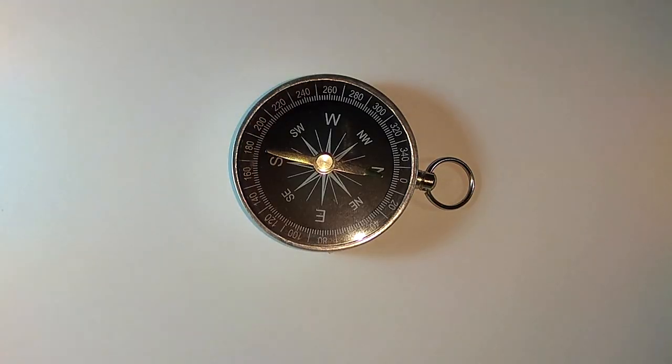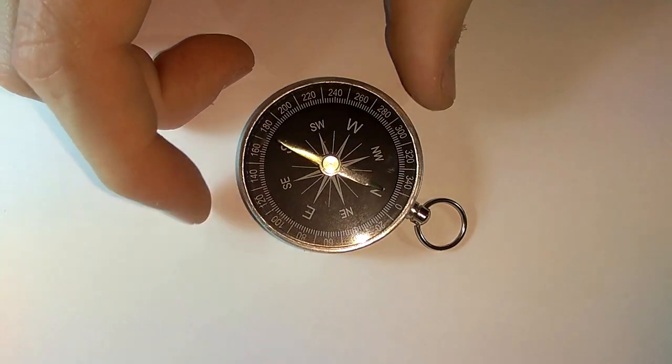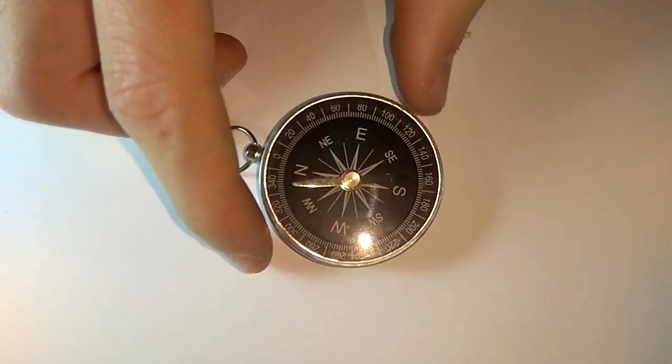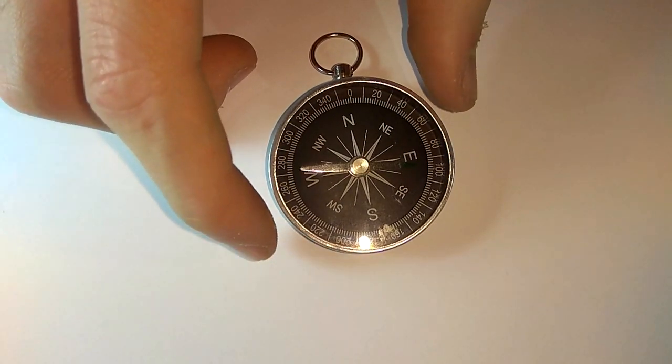A compass is a device based on magnets' behavior, which consists of a magnet that always points north. The north pole of the magnet points the geographic north.